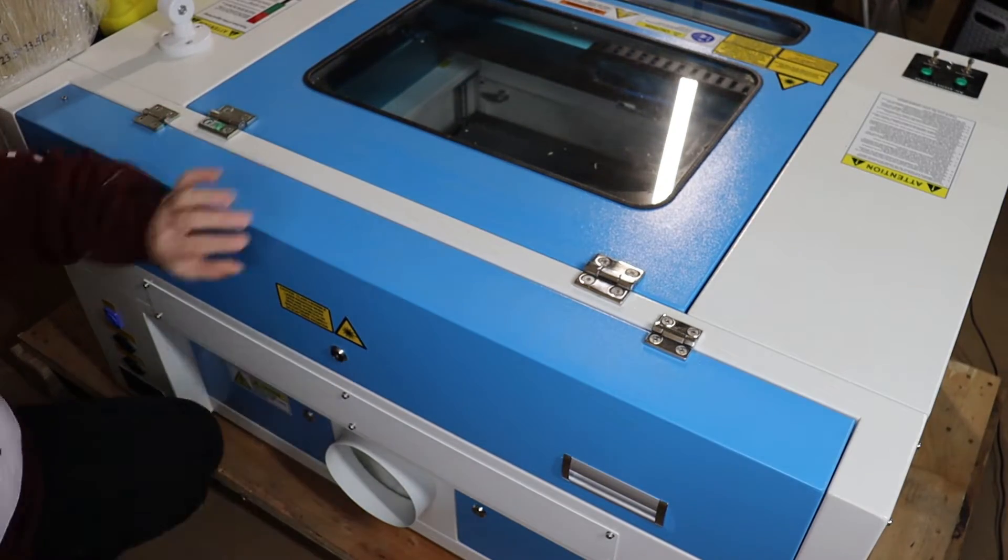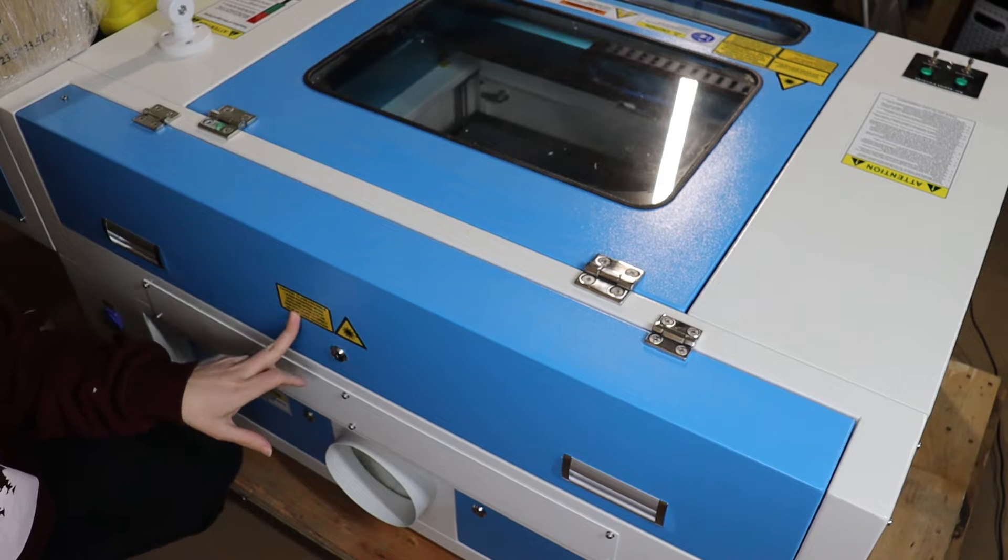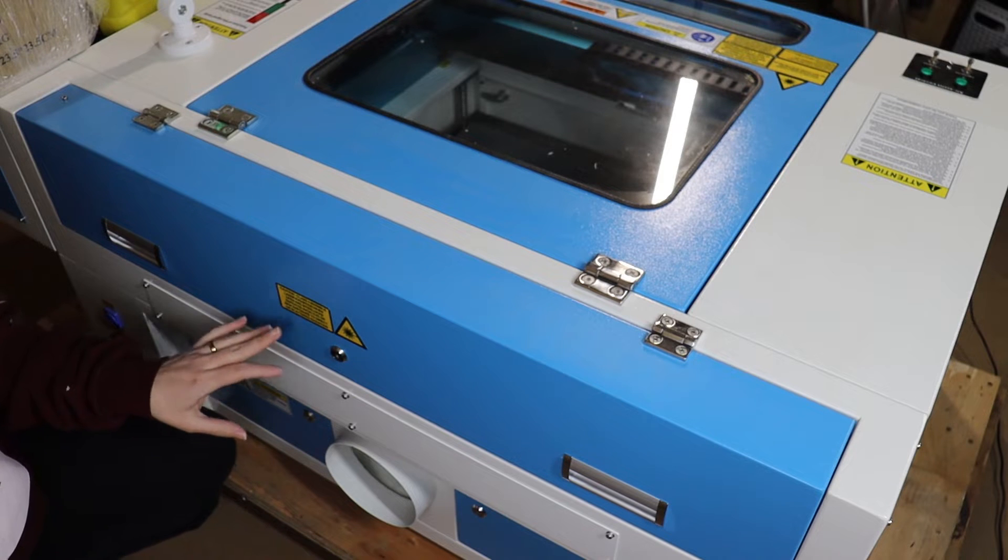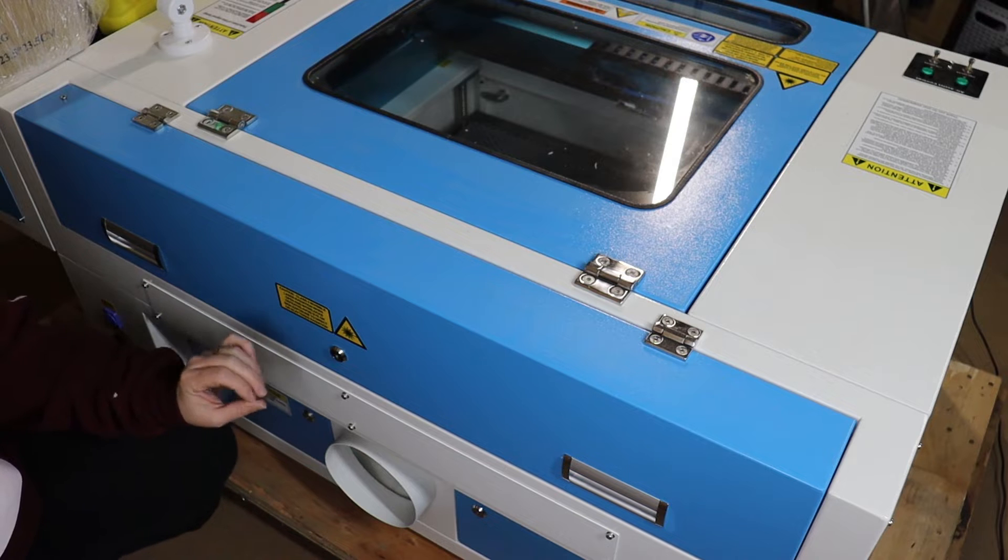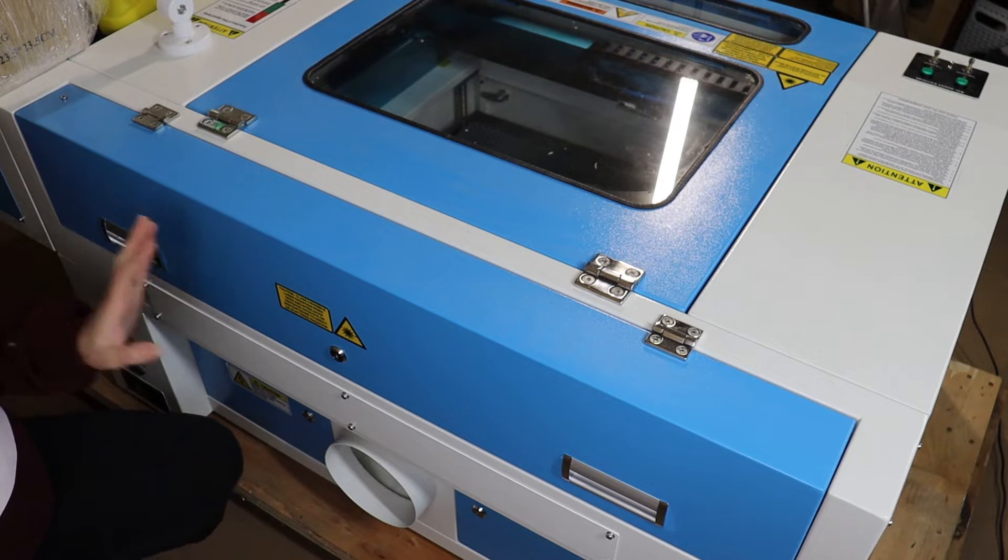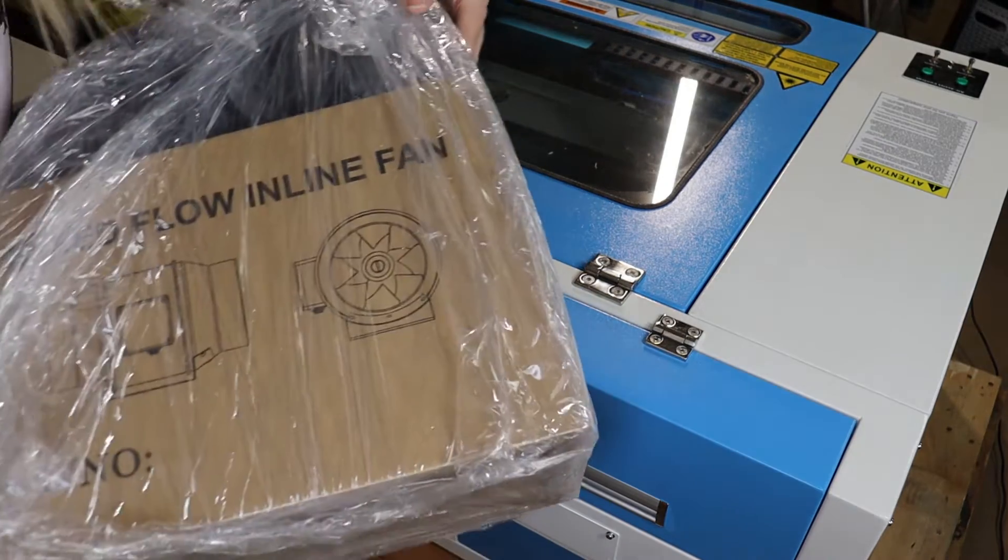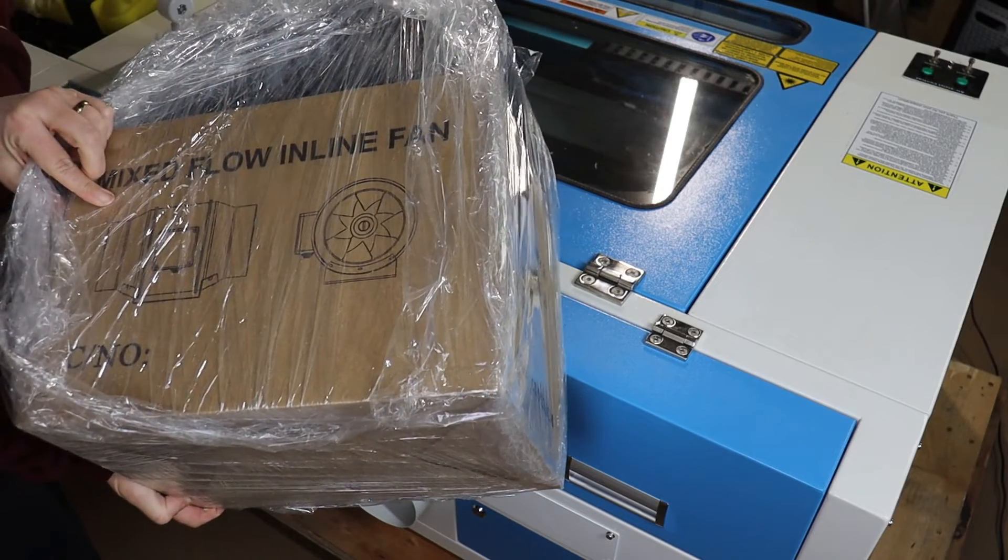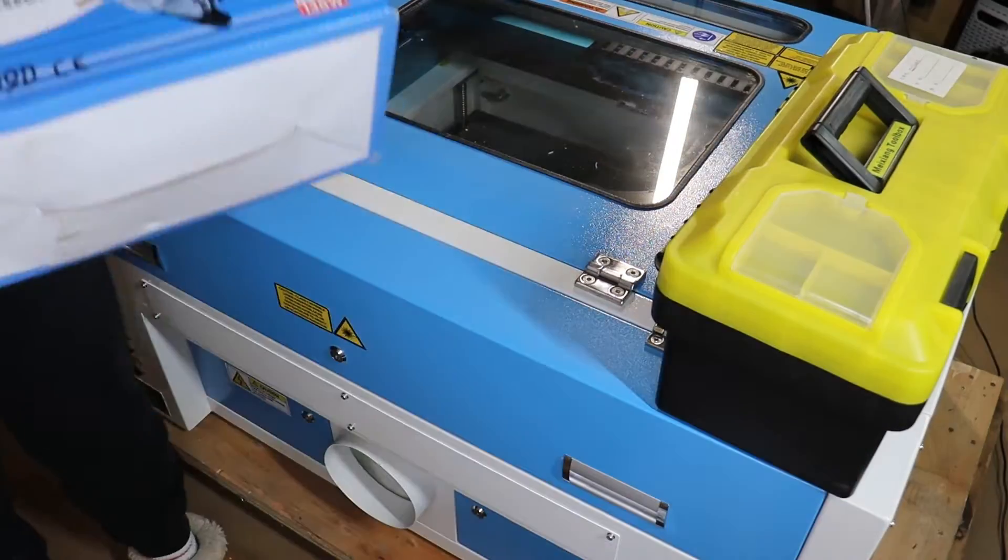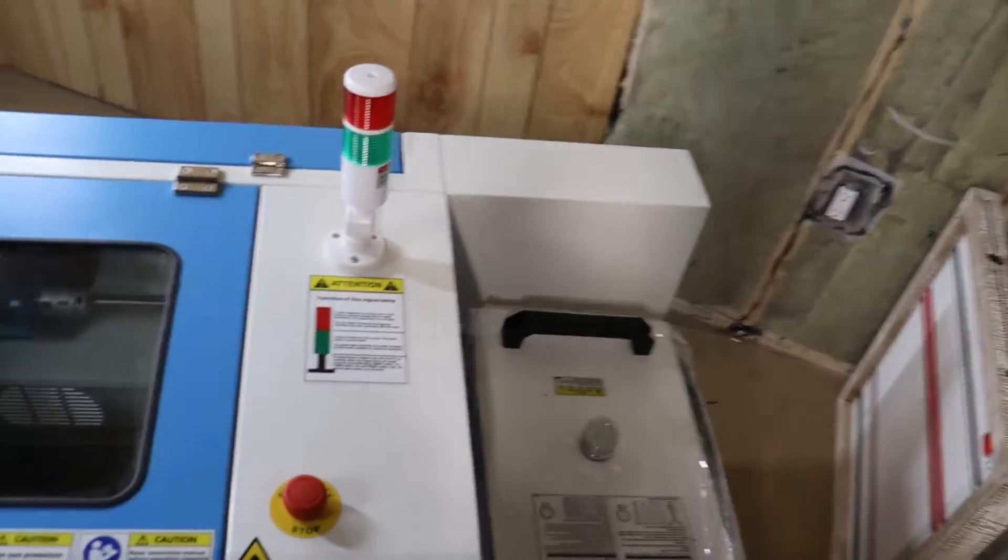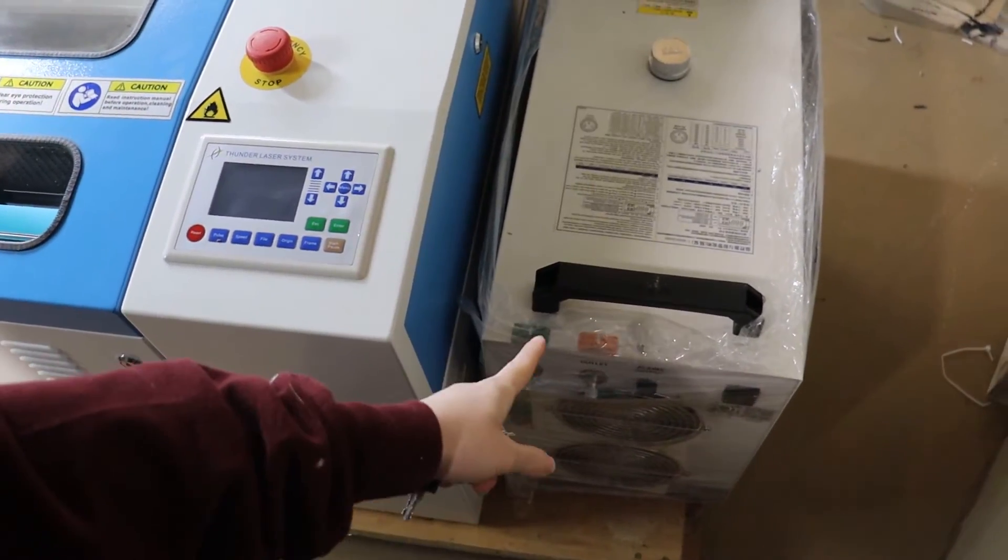This is really important, so it tells you right here on the outside: Class 4 invisible laser radiation when open and interlocks defeated. Avoid eye contact or skin exposure. So you should always keep this locked and sealed. With your laser, you also have the mixed flow inline fan. They send you the little toolbox with all the tools you need. You have an air compressor and then you also have your water chiller and I have mine right here set beside.